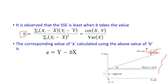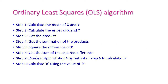The formula for b (slope) is: the sum of (xᵢ − x̄)(yᵢ − ȳ) divided by the sum of (xᵢ − x̄)², which is the covariance of x and y divided by the variance of x. And a is computed as: a = ȳ − b·x̄, where x̄ is the mean of all x values and ȳ is the mean of all y values.